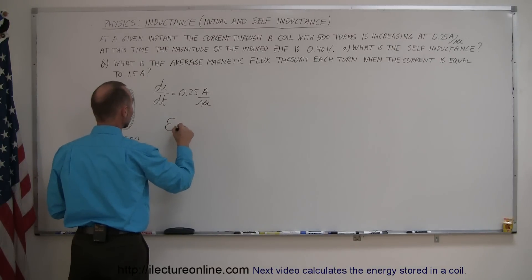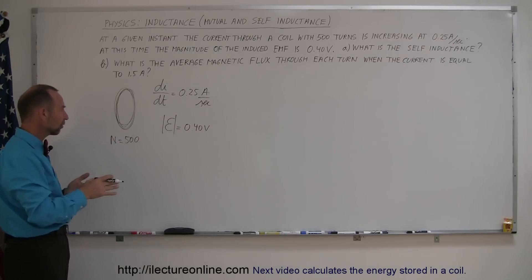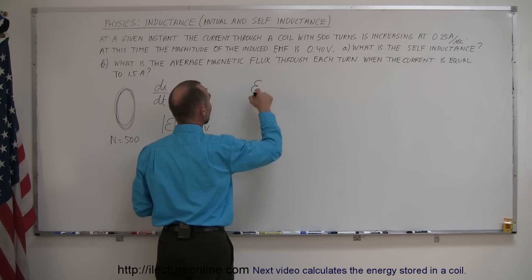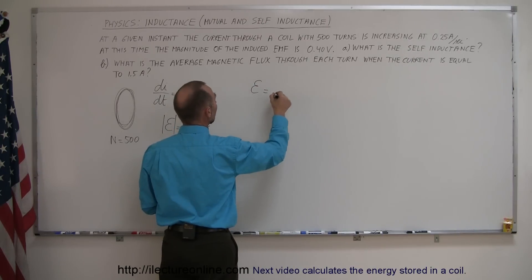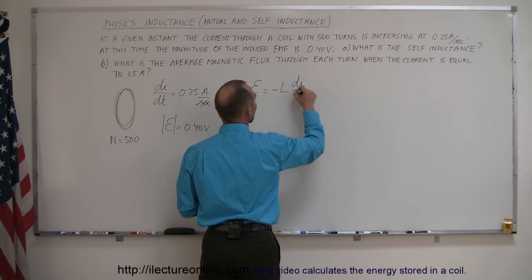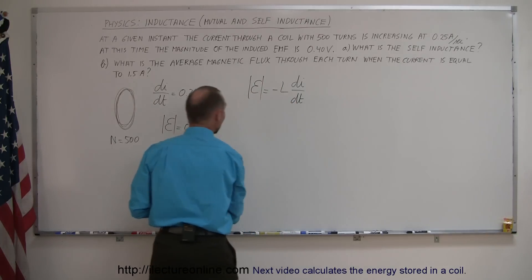So the EMF induced is equal to 0.40 volts and that is the magnitude of the EMF because typically the EMF is the negative of the self-inductance times a change in the current. So let's write down that equation. So we normally say that the EMF induced by itself is equal to the negative self-inductance times a change in the current over time. But since we're looking for the magnitude, we can go ahead and get rid of the negative sign.